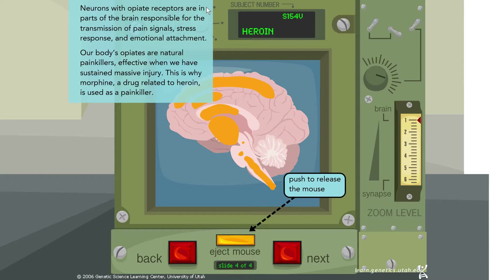Neurons with opiate receptors are in parts of the brain responsible for transmission of pain signals, stress response, and emotional attachment. The body's opiates are natural painkillers, effective when we've had sustained massive injury. This is why morphine — a drug fairly similar to heroin — is used as a painkiller.